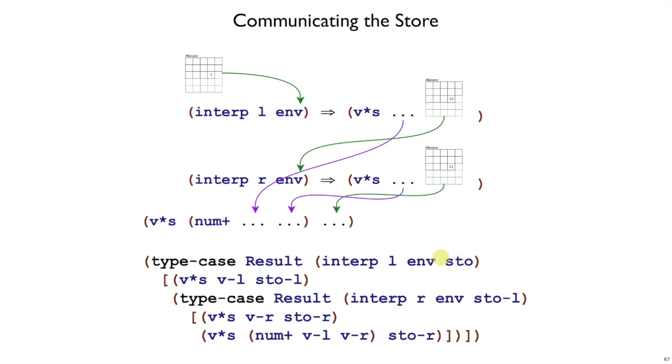And we just pass it along into evaluating the left expression. We get back a result, which is a value and a store. We're going to use that value later. Meanwhile, we interpret the right expression using that store from the first call to interp for L. That interpretation on the right-hand side will give us a further updated store. This stow R here is the one that came back right here. This is stow L. This is stow R.